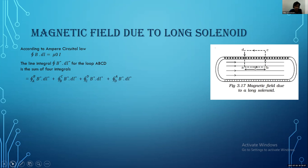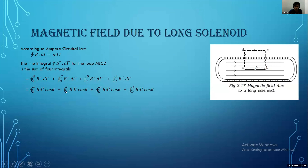Applying Ampere's Circuital Law: closed integral B dot dL equals mu zero I. The line integral for loop ABCD is the sum of four integrals: integral from A to B of B dot dL, plus integral from B to C, plus integral from C to D, plus integral from D to A. Since the dot product of two vectors involves the cosine of the angle between them, we substitute: integral A to B of B dL cos theta, plus B to C, plus C to D, plus D to A.